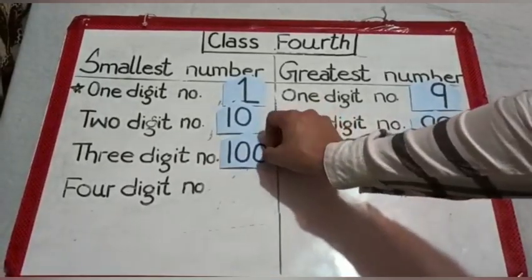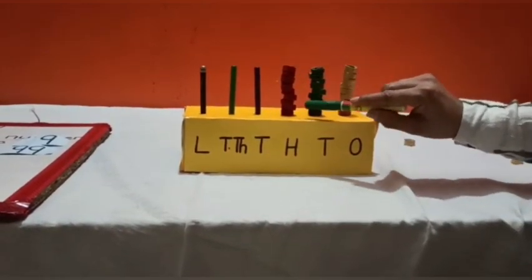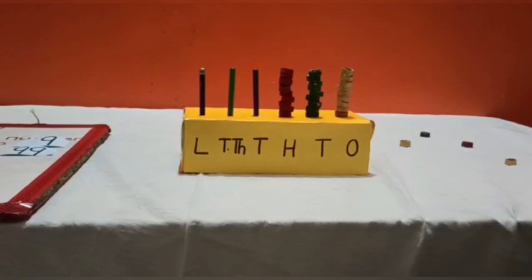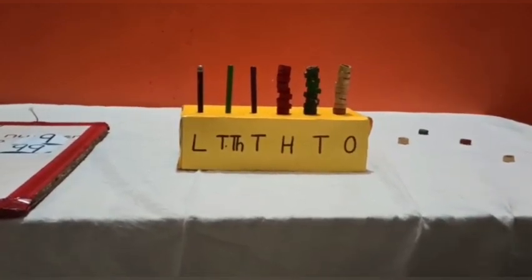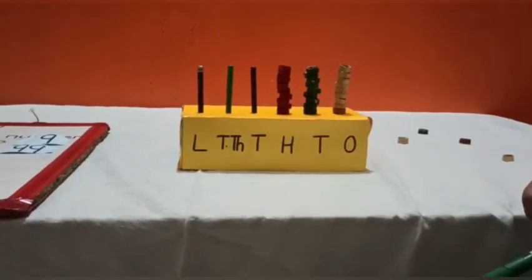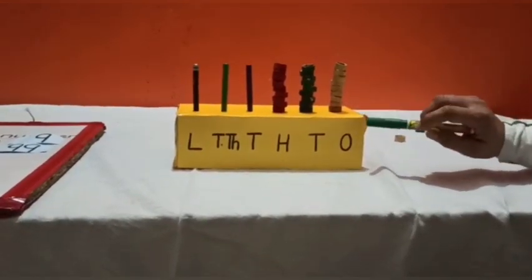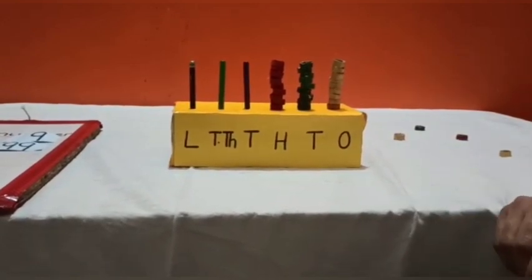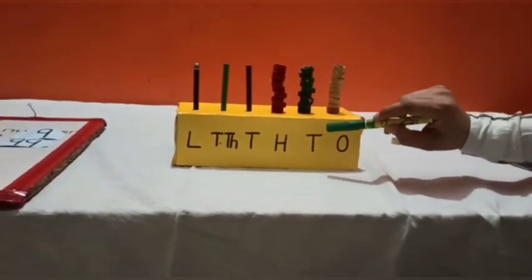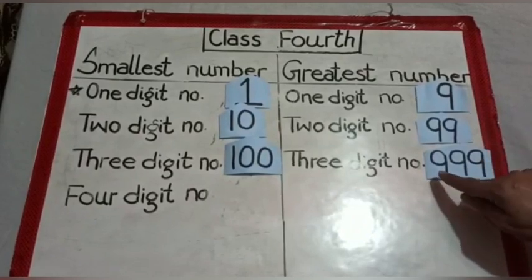Now students, the 3-digit smallest number is 100. Now see — we have 9 beads in the 100's rod, 9 beads in the 10's rod, and 9 beads in the 1's rod. We have to find the 3-digit greatest number. 9 beads in the 100's rod means 900, 9 beads in the 10's rod means 90, and 9 beads in the 1's rod means 9. So students, the maximum 3-digit number, or greatest 3-digit number, is 999.